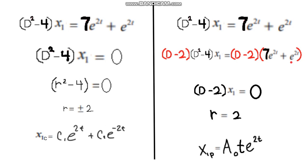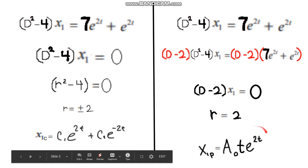Same thing with e^(2t). And we're left with (D-2)x1 is equal to 0, because we already have solutions for (D^2 - 4). We get r is equal to 2. So our particular solution will look something like this.